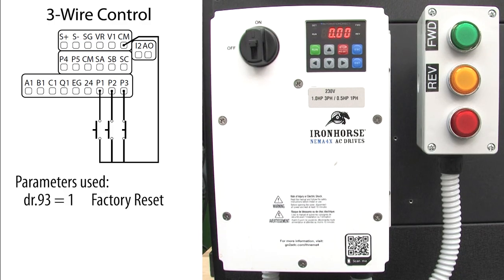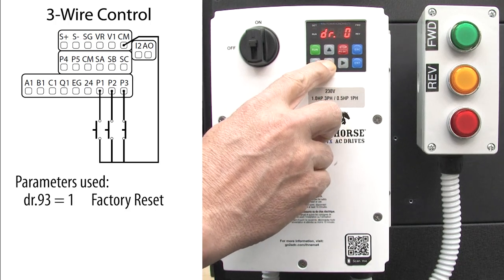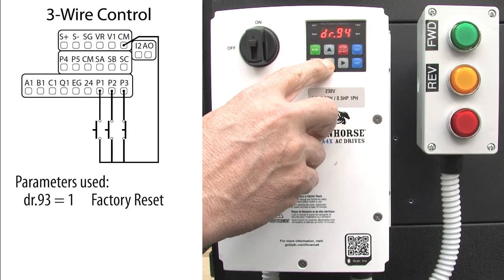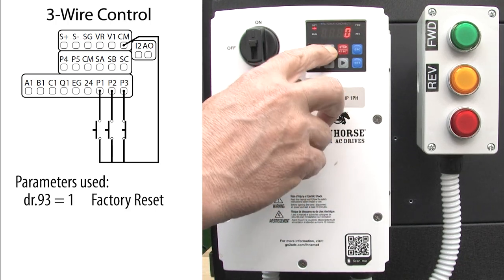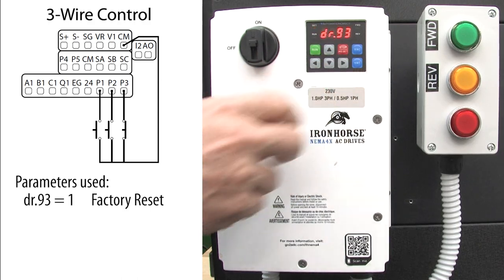We'll reset the drive to factory default so we know exactly where we are starting from. Right arrow to the drive screw. Down arrow to parameter 93, enter 01, select it, accept it.